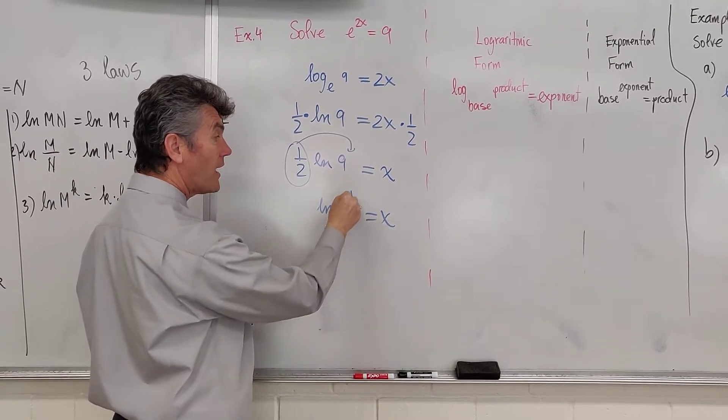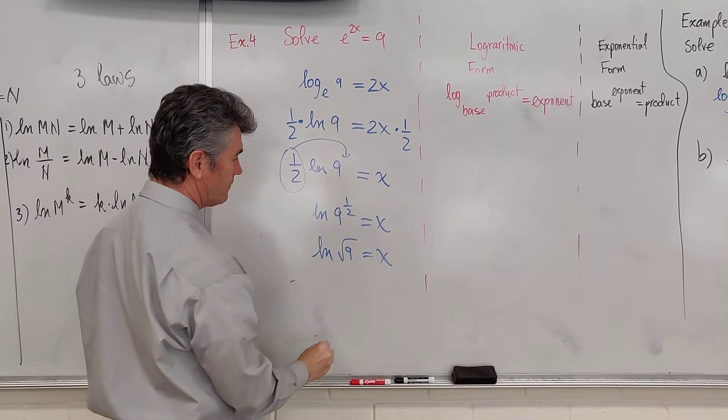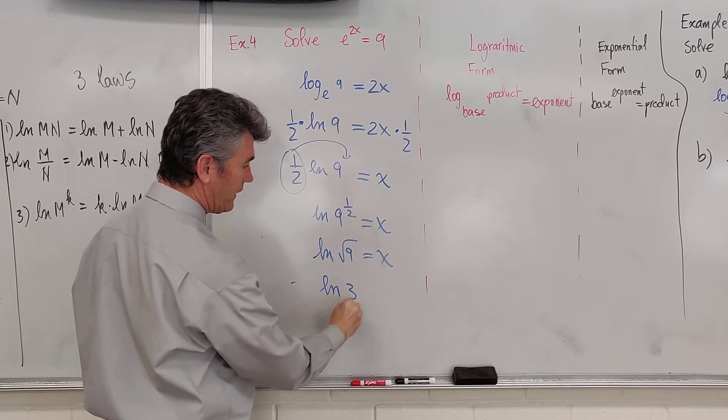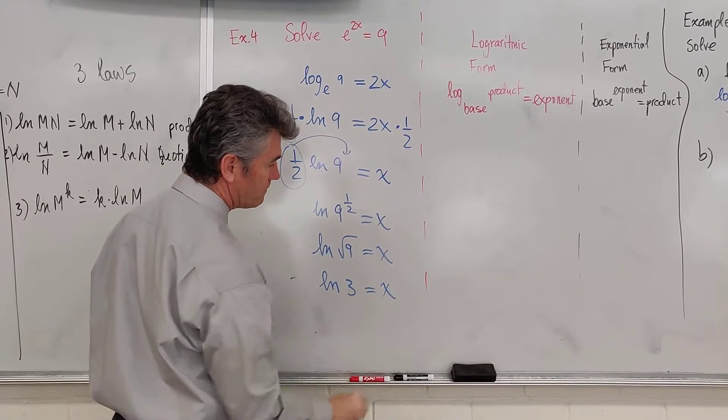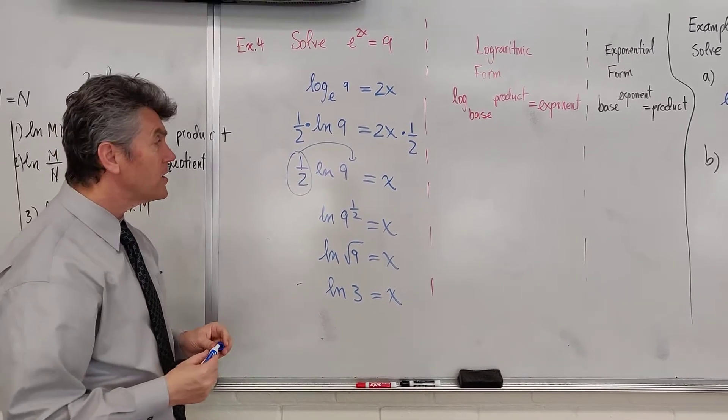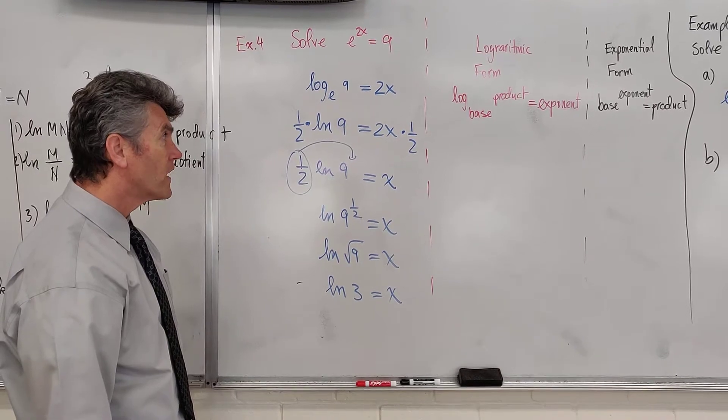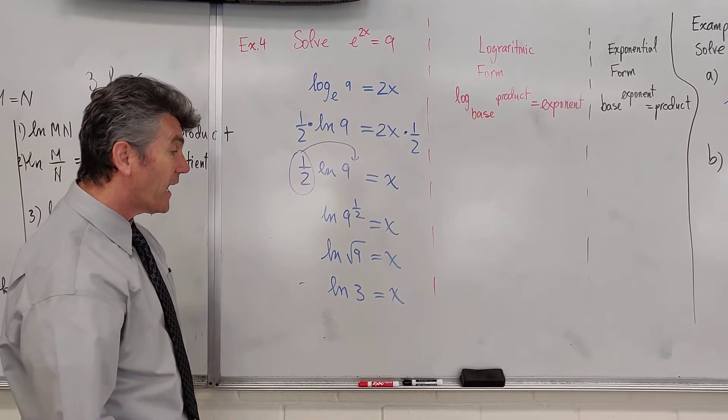To raise 9 to the power of 1 half is the same as taking the square root of 9. Natural log of 3 is equal to x. Calculation ready form. Like I said, you are responsible for finding this using your own calculator.